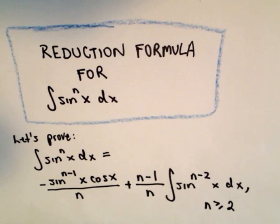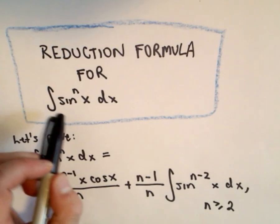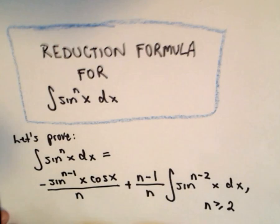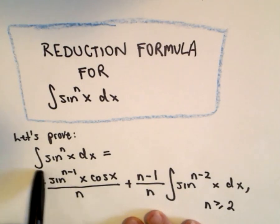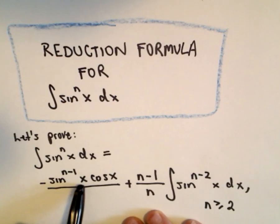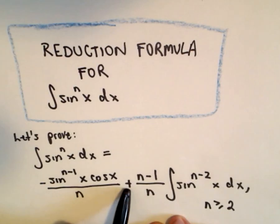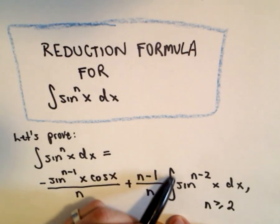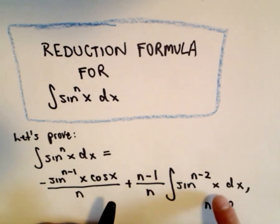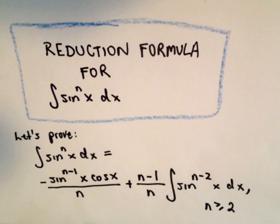In this video we're going to prove a reduction formula for the integral of sine raised to the power of n, dx. The reduction formula states that if you integrate that you get negative sine of (n minus 1)x times cosine x, all divided by n, plus (n minus 1) divided by n multiplied by the integral of sine raised to the power of (n minus 2) of x dx. This is for n greater than or equal to 2.